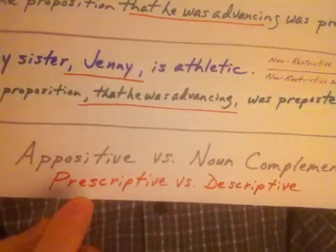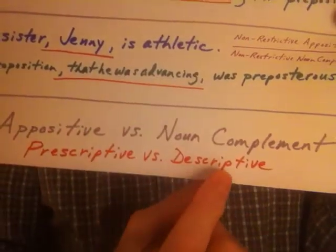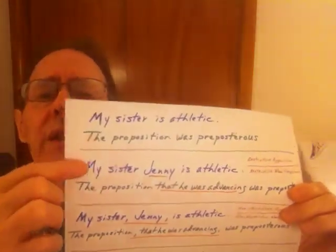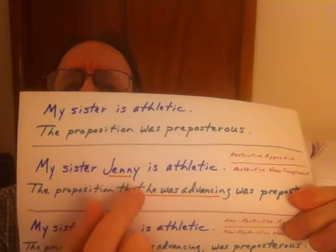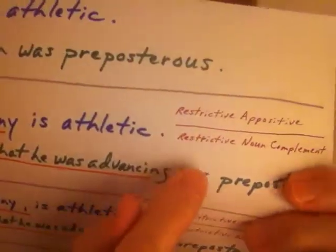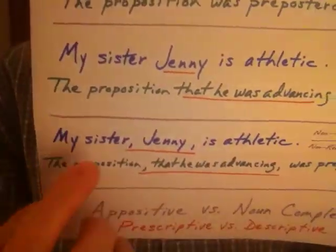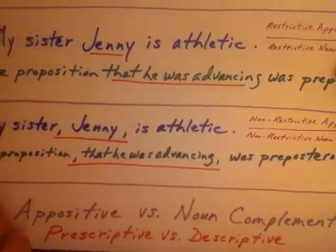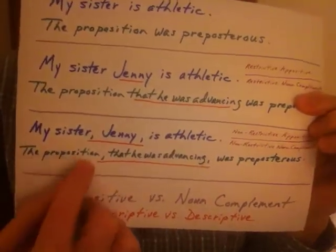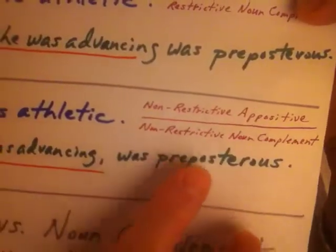Well, that's the whole deal. It all goes back to the worldview you have regarding grammar — is it prescriptive or descriptive, or a combination of both? Because if you say this is a restrictive appositive, then you could say this is a restrictive noun complement. And down here, if you're saying this is a non-restrictive appositive, then technically speaking, you could conceivably refer to this noun clause with the commas as a non-restrictive noun complement.